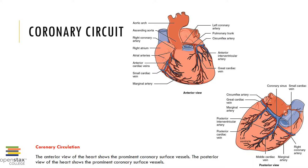Once blood drops off oxygen to the walls of the heart, it returns through veins — the venous return. The small cardiac vein runs parallel to the marginal arteries and right coronary artery. The middle cardiac vein runs parallel to the posterior interventricular artery and circumflex artery. All of these merge to form the coronary sinus, which drains into the right atrium along with the superior vena cava and inferior vena cava.